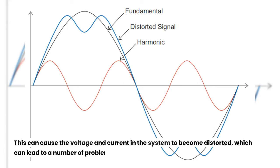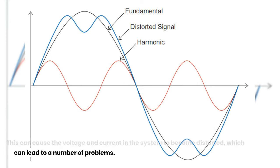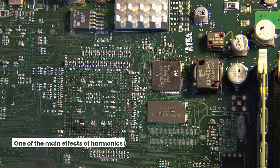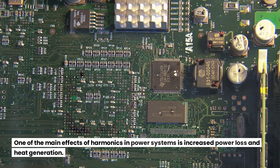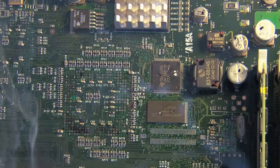This can cause the voltage and current in the system to become distorted, which can lead to a number of problems. One of the main effects of harmonics in power systems is increased power loss and heat generation.